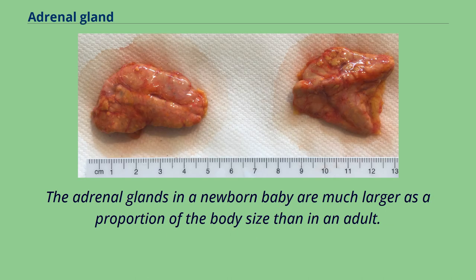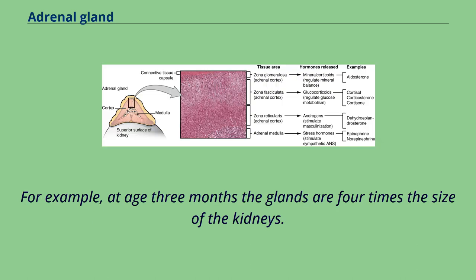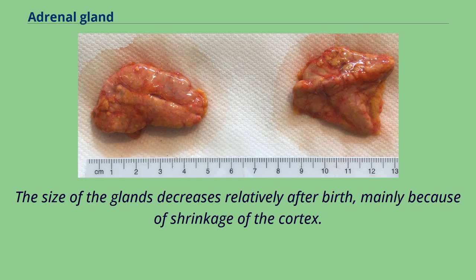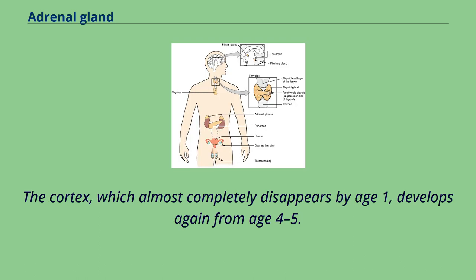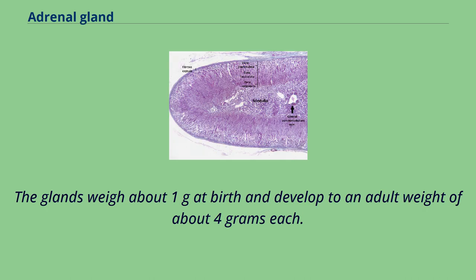The adrenal glands in a newborn baby are much larger as a proportion of the body's size than in an adult. For example, at age 3 months the glands are 4 times the size of the kidneys. The size of the glands decreases relatively after birth, mainly because of shrinkage of the cortex. The cortex, which almost completely disappears by age 1, develops again from age 4 to 5. The glands weigh about 1 gram at birth and develop to an adult weight of about 4 grams each.